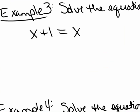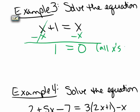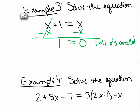Example 3: solve x plus 1 equals x. I subtract x on both sides to gather the x terms together, and I get 1 equals 0. All the x's have canceled, but this time I'm left with an equation that doesn't make sense — 1 doesn't equal 0, ever. No matter what x I start with, it will never be true that 1 equals 0. So there are no solutions; no x values will ever make that true.